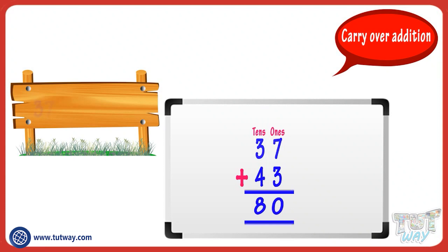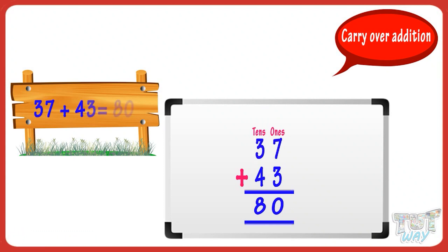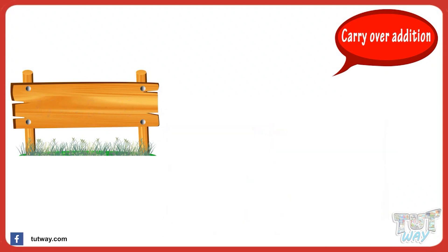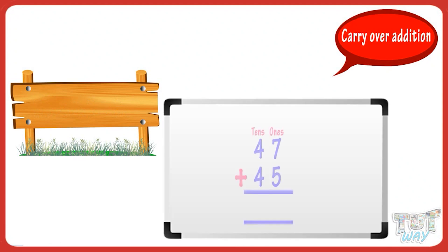We got it! Thirty-seven plus forty-three equals eighty. Now let's do some more sums for practice.